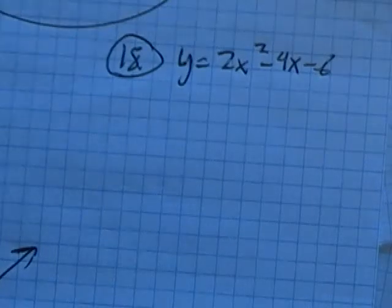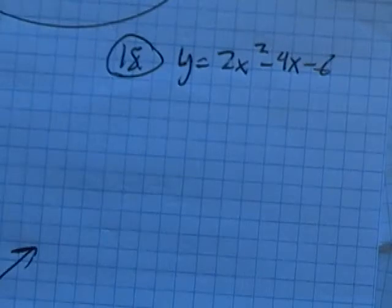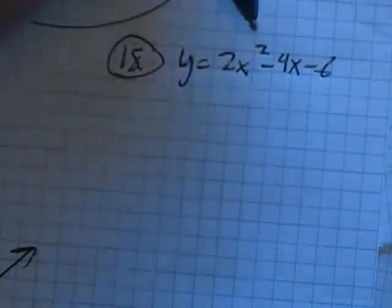We're going to do problem 18 off the Math 98 final practice and we are supposed to graph this thing, identify the intercepts and the vertex. So I know it has a vertex, it's a quadratic.